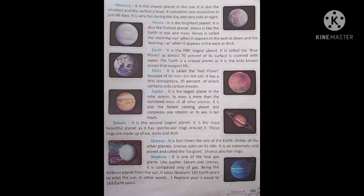Earth — Prithvi: Yeh Blue Planet ya paanchwa sabse bada grah hai. Ise Blue Planet — neela grah — bhi kaha jaata hai kyunki iski satah ka lagbhag 70 pratishat hissa paani se dhaka hua hai. Prithvi ek anokha grah hai kyunki yeh ek maatr gyaat grah hai jis pe jeevan sambhav hai.